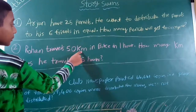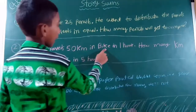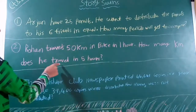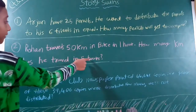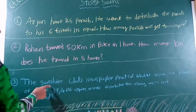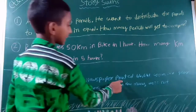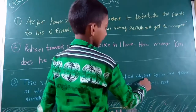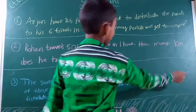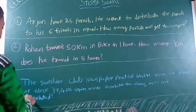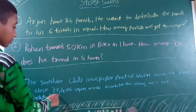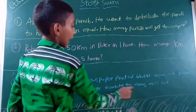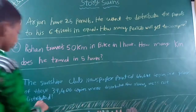Arjun travels 50 km by bike in 1 hour. How many km does he travel in 5 hours? Third question: The Sunshine Club newspaper printed 44,641 copies in a year. Of these, 39,406 copies were distributed. How many were not distributed?